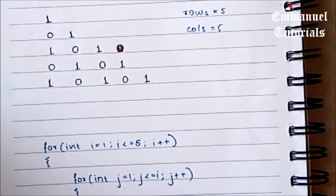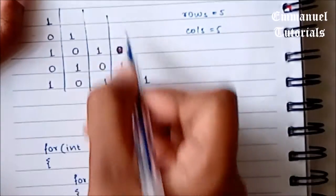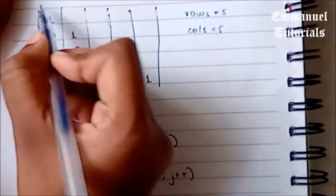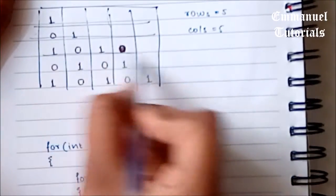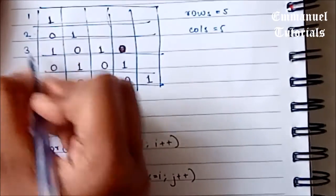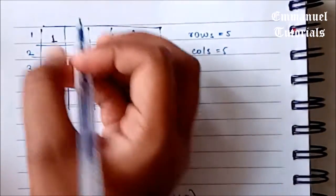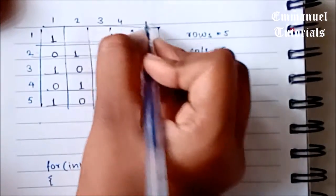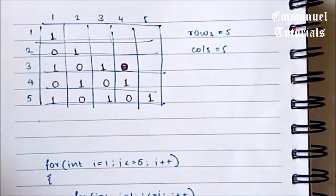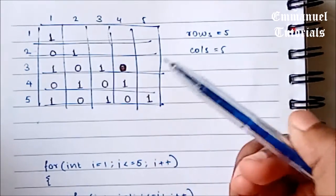Now we'll see how the next number is being determined. So if we try to draw this in the form of a matrix and assign the row number and column number, we'll try to make out how we are actually determining the number to be printed at a specific position.